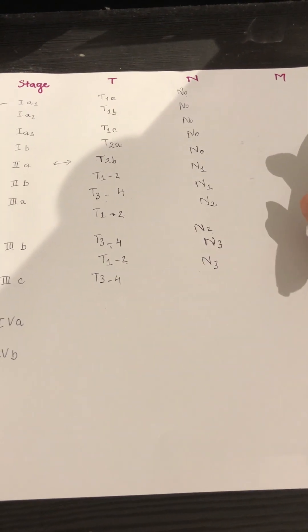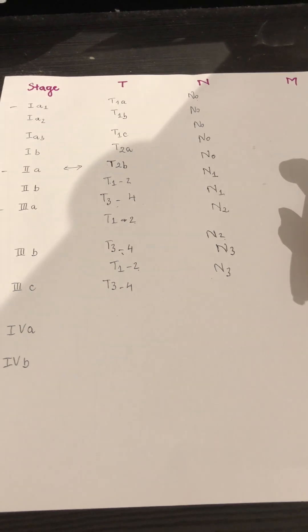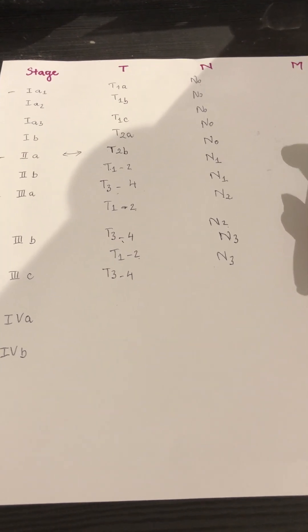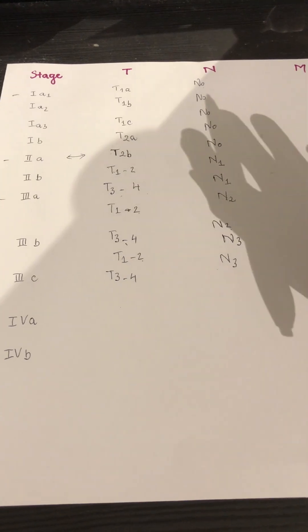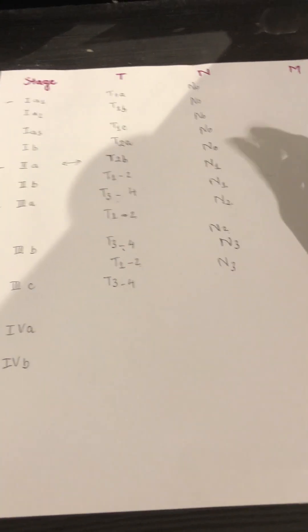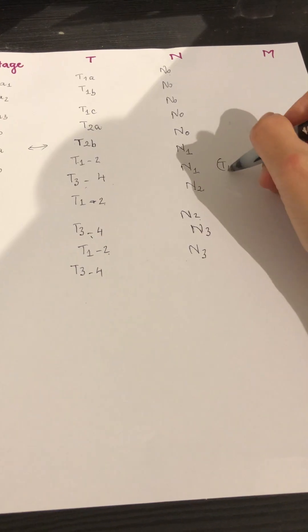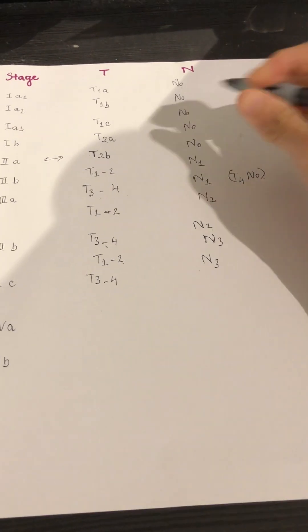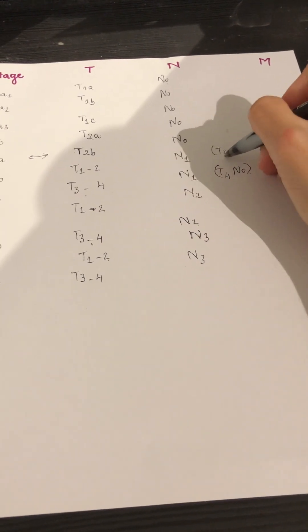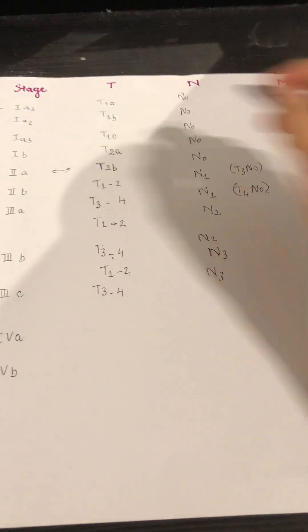Now you are wondering where the T3, T4, N0. So memorize this. So 3 always go with T4. So that would go to 3A, that would be T4 N0 here, and then T3 N0 will fall into 2B.